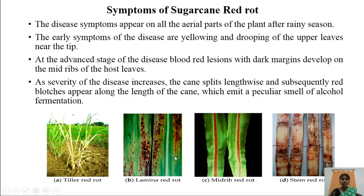As the disease advances, blood-red lesions with dark margins develop on the mid-rib region as well as on the foliar region. As severity increases, the cane splits lengthwise and subsequently red color blotches appear along the length of the cane, which emit a particular smell of alcohol fermentation. Here we can observe the various symptoms of red rot of sugarcane — yellowing of leaves appearing after the rainy season, followed by drooping, and in severe conditions, red color patches or lesions on the leaf surface and the split cane.